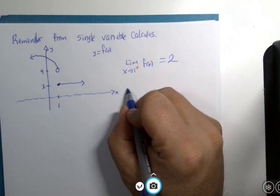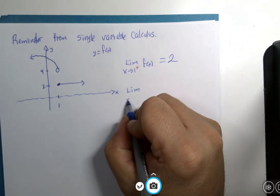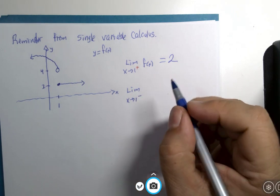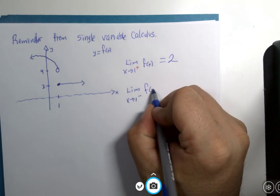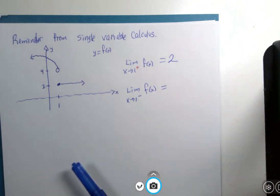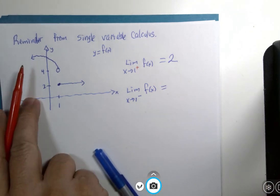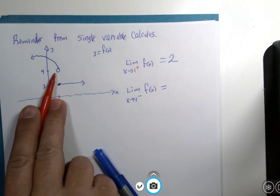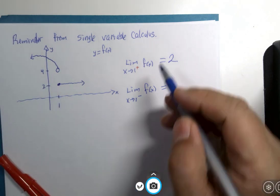But if you approach x is 1 from the left-hand side, what y value do you approach? Well, you approach, you get closer to y is 4.